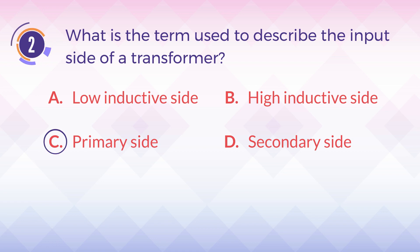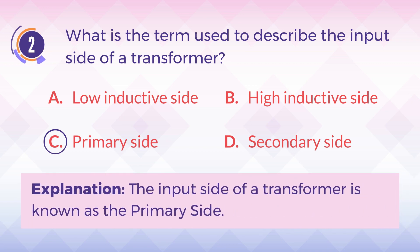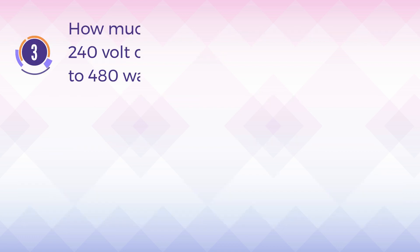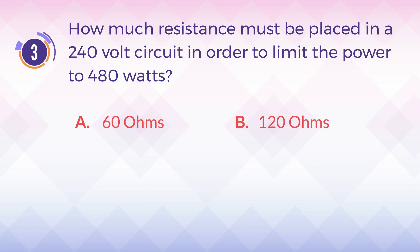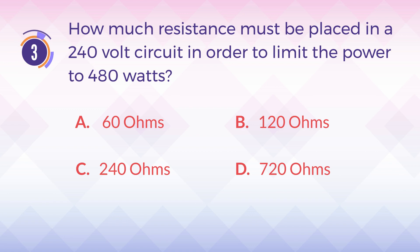The correct answer is C) primary side. Explanation: the input side of a transformer is known as the primary side. Number three: how much resistance must be placed in a 240 volt circuit in order to limit the power to 480 watts? A) 60 ohms, B) 120 ohms, C) 240 ohms, D) 720 ohms.